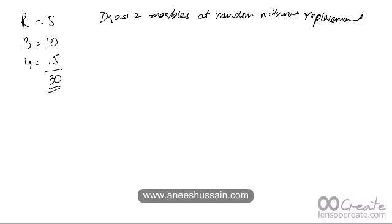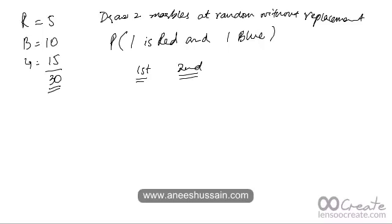Now suppose the question asks for the probability that one marble is red and one is blue, without specifying the order. You need to figure out the number of ways this can happen. The first way: the first marble is red and the second is blue. But there's a second way: the first is blue and the second is red. This is different from the previous question, where order was specified. Here the order is not specified, so it can happen in any order, making it more likely for you to win the bet.